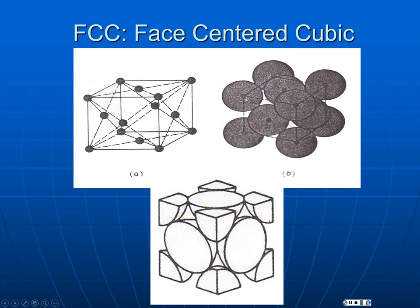The unit cell is what is inside the cube. All of the atom that's outside the cube is in a neighboring cell. If you clone this, you can glue it together endlessly to build a three-dimensional array. So how many atoms are in the FCC unit cell? There are six on the face, each a half — that's three. And there are eight on the corners, each one-eighth. So you have four atoms in a unit cell.